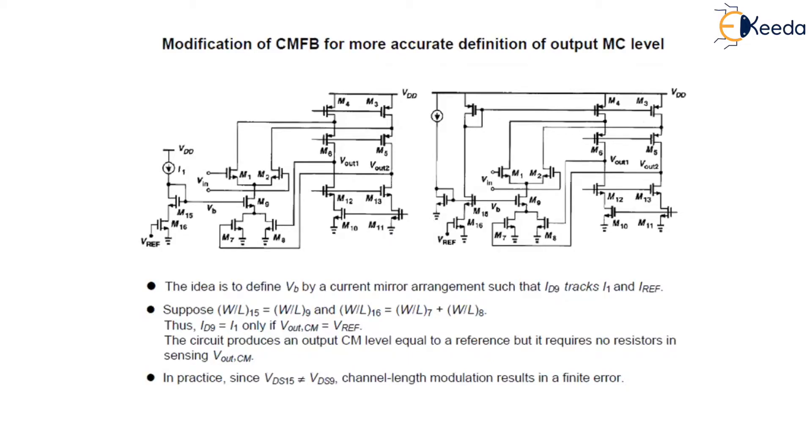Now, some modification is done in this figure. The idea is to define the voltage VB by current mirror arrangement such that I89 tracks I1, and add V reference.